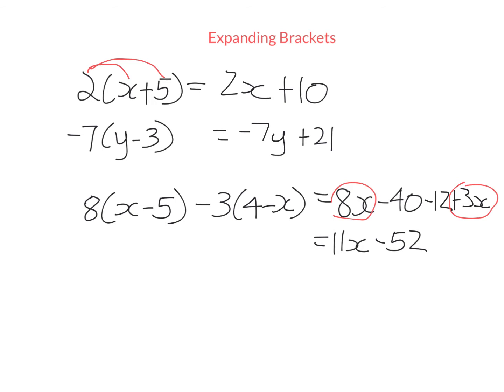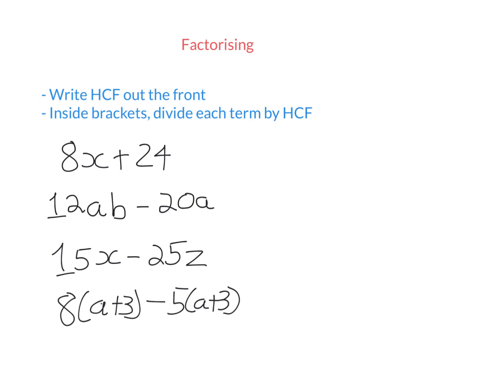Let's now look at the opposite of expanding, which is factorizing. Whereas expanding starts with brackets and ends without, factorizing is the opposite — I start with an expression and end up with brackets. To do that, I write the highest common factor out the front, and inside the brackets I divide each term by that highest common factor. So for this here, the highest common factor of 8x and 24 is 8. I write that out the front. In the brackets: 8x divided by 8 is x. What do I times by 8 to get positive 24? That's plus 3.